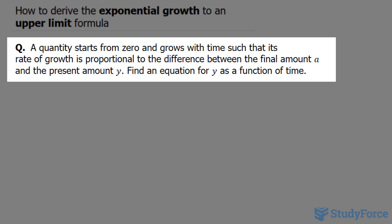The question reads: a quantity starts from zero and grows with time such that its rate of growth is proportional to the difference between the final amount a and the present amount y. Find the equation for y as a function of time.